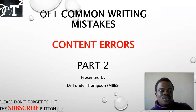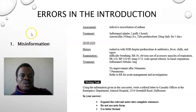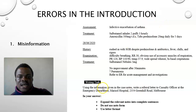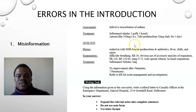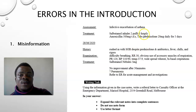Let's assume this is our patient case note. Some candidates make the error we call misinformation — giving out false or inaccurate information. We are writing a letter to a casualty officer and we are suspecting our patient has pneumonia. The patient has been treated for asthma, depression, and hypertension, and of late has started having features suggestive of pneumonia.